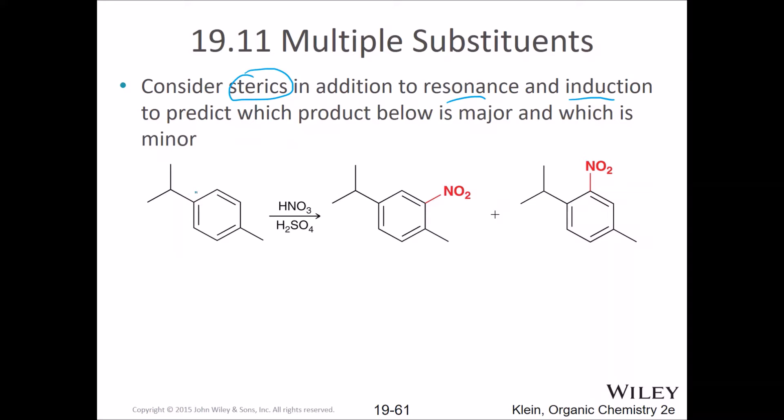Okay, so first of all, which of these are activators or deactivators? What kind of group is this? It's an alkyl group. Here's another alkyl group. So we know that alkyl groups are electron donating via induction. So they're both roughly equal in their donating abilities. Turns out isopropyl will be a little bit more donating. But what's the other factor involved here?